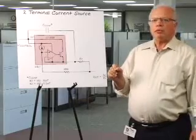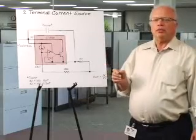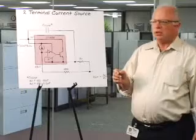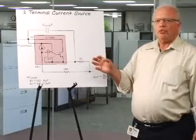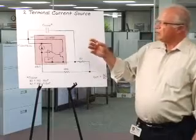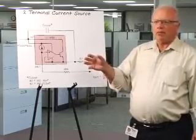And R1 sets the current through the whole device. So if I wanted to make a 100 milliamp two terminal current source, R1 would be a 10 ohm resistor.